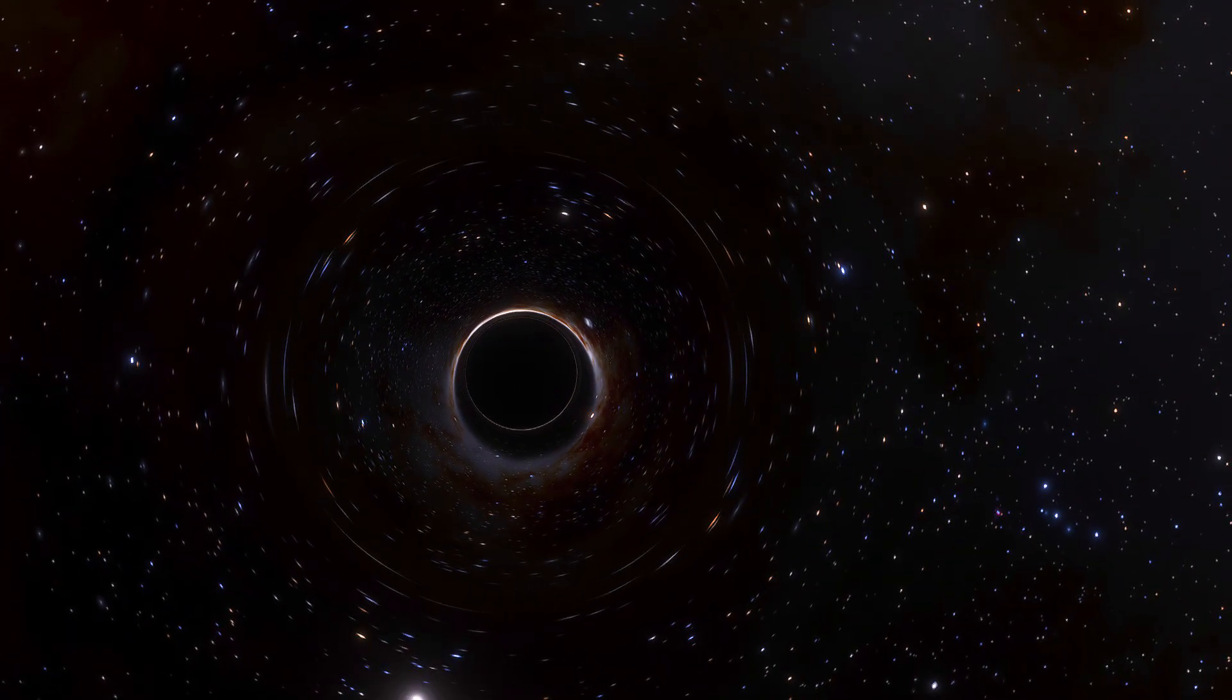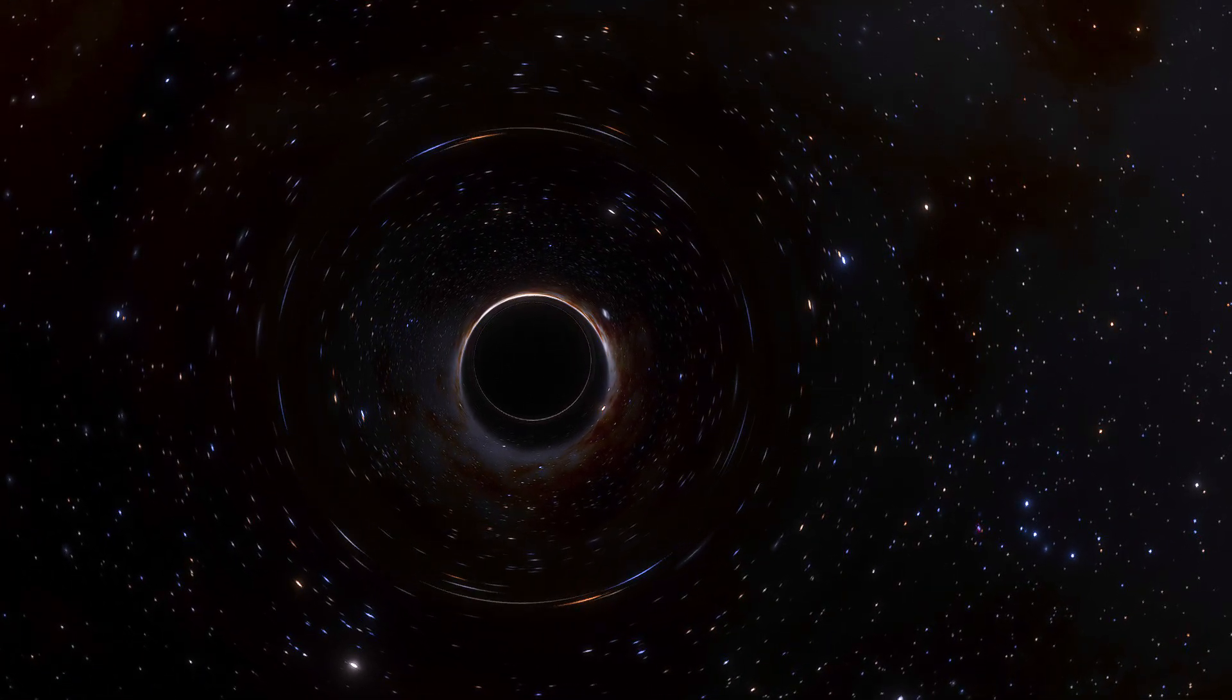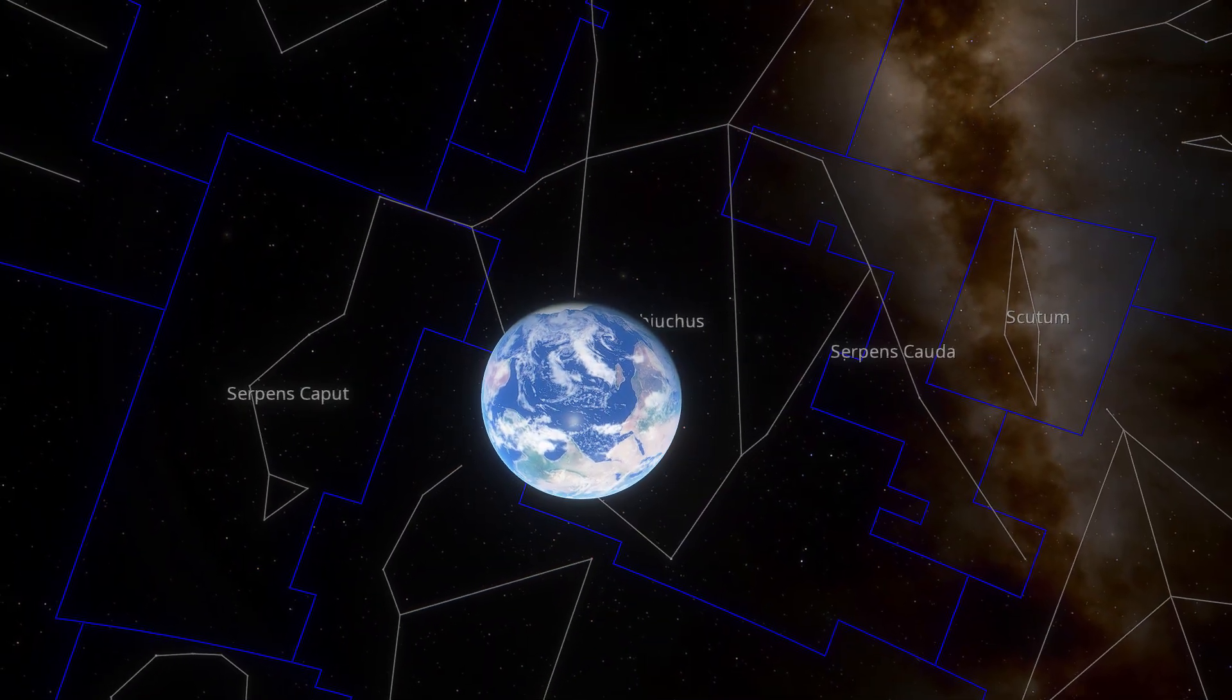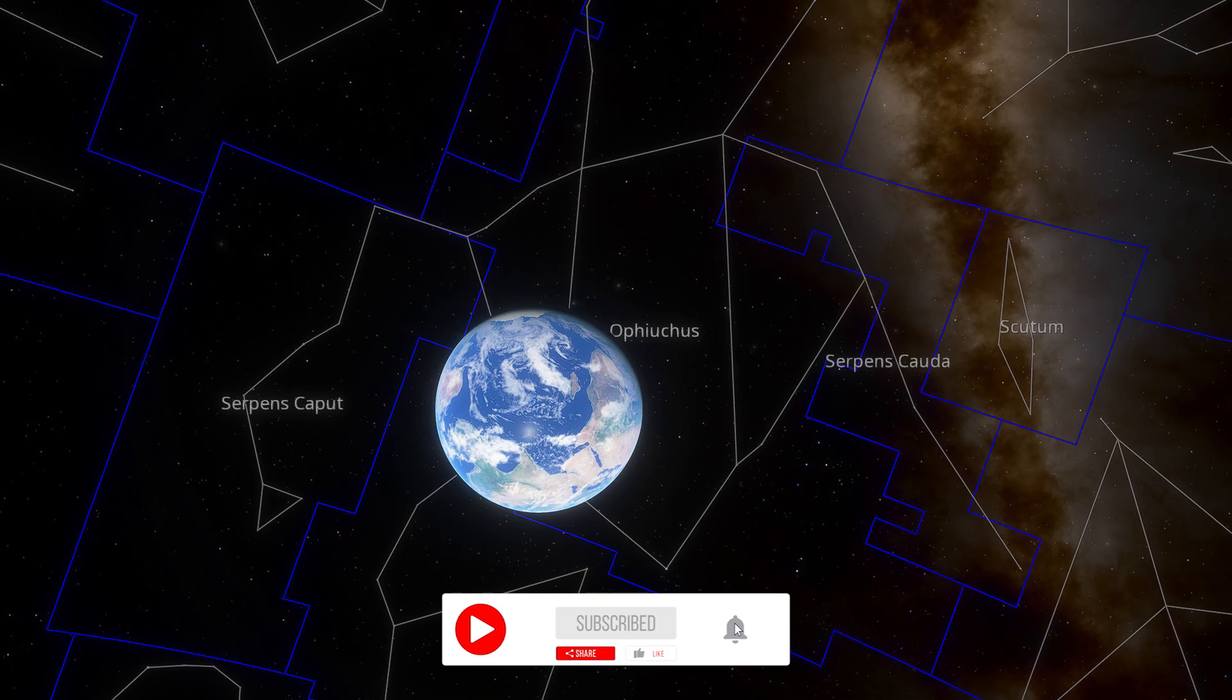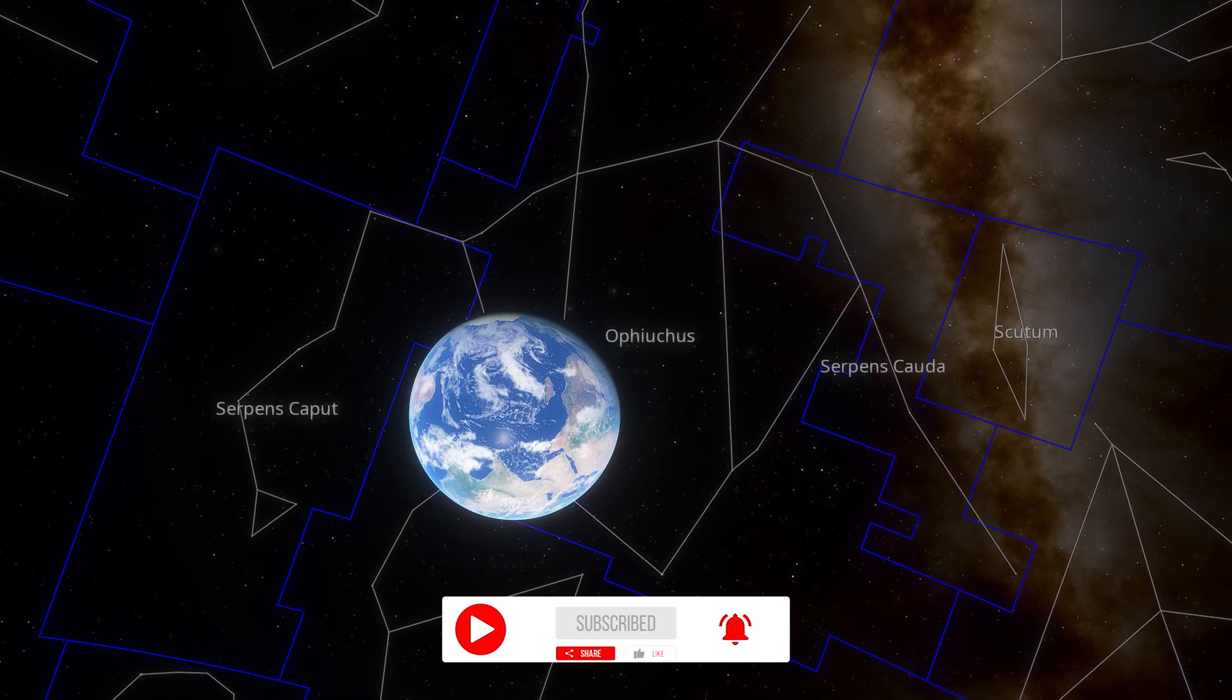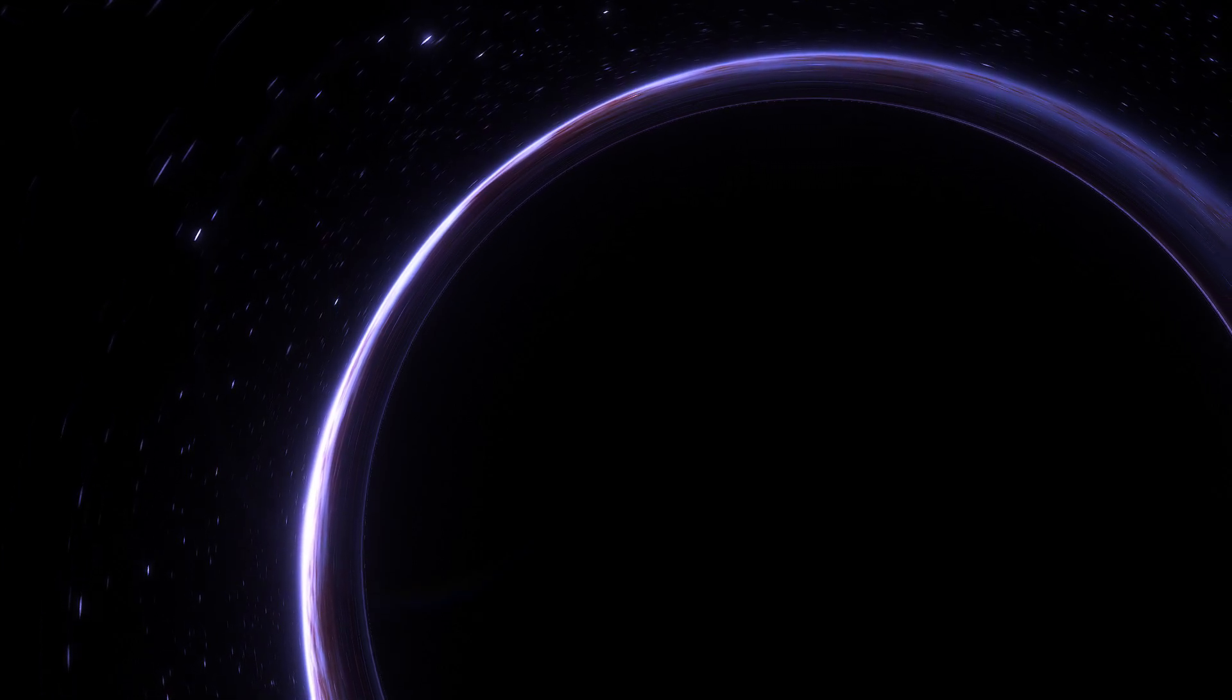This time, astronomers discovered the closest one to Earth. Called Gaia BH1, the object is a dormant black hole about 1,560 light-years away from us in the constellation Ophiuchus, making it three times closer than the last black hole to hold the record, an X-ray binary in the constellation of Monoceros.